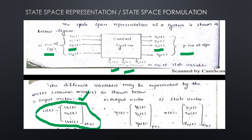The output variables are denoted by the letter y. If we place all the output variables in a column matrix, then that column matrix is known as the output vector. The output vector is denoted by y(t) = [y1(t), y2(t), ..., yp(t)], where y1(t) through yp(t) are the elements of the column matrix, for a system with p number of output variables.